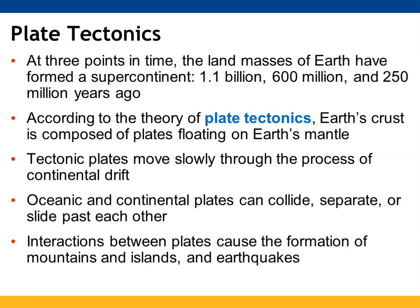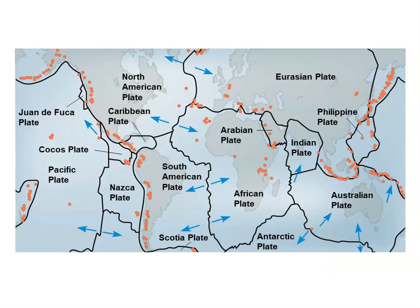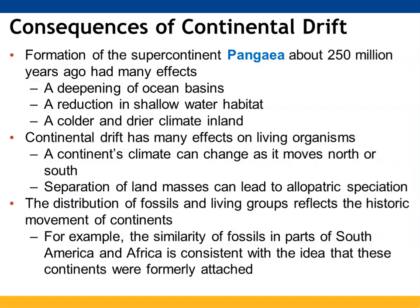When plates interact, they cause mountains and islands to form, as well as earthquakes. The supercontinent Pangea, which formed about 250 million years ago, led to a deepening of the ocean basins, a reduction in shallow water habitats, and a colder and drier inland climate. When land masses separate, we can have allopatric speciation. The distribution of fossils and living groups is representative of how these continents have moved — there is similarity in fossils both in South America and Africa, which supports the idea that the continents were previously attached.